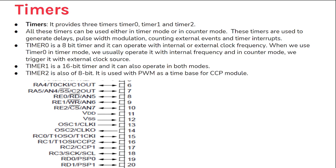The next feature is timers. It has three timers: Timer 0 (8-bit), Timer 1 (16-bit), and Timer 2 (8-bit). Timer 0 and Timer 2 are 8-bit; Timer 1 is a 16-bit timer. Timer 2 is used with pulse width modulation and the capture/compare (CCP) module.